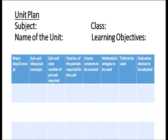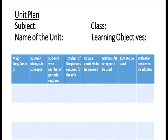For example, in the subject of science in class 7, we have a unit on diseases. In our first column, major idea or concept, we have the unit 'diseases'. Under the subunits, we have types of diseases, and we can take four types: communicable and non-communicable diseases, diseases transmitted through vectors, and infectious diseases. Subunit-wise, the number of periods required is what we note down — we would take two periods for each kind of disease, giving us eight periods altogether.